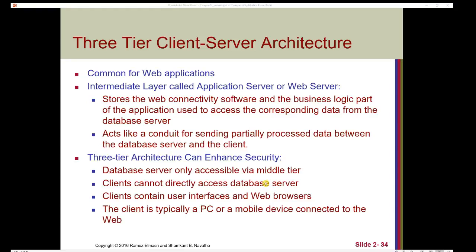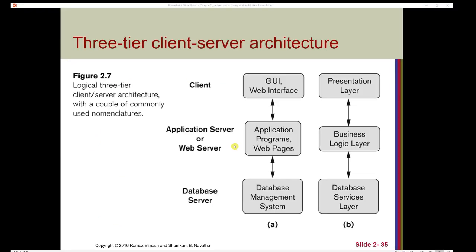In a three-tier client-server architecture, there is an intermediate layer called an application server or web server. This intermediate layer stores the web connectivity software and the business logic part of the application used to access data from the database server, acting as a conduit for sending partially processed data between the database server and the client. One advantage of the three-tier architecture is enhanced security — the database server is only accessible via the middle tier, so clients cannot directly access the database server.